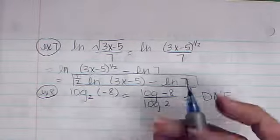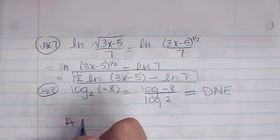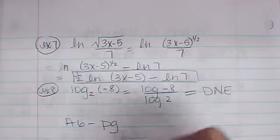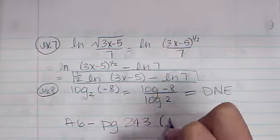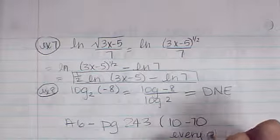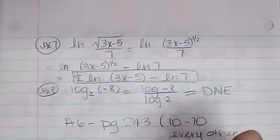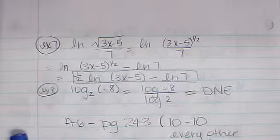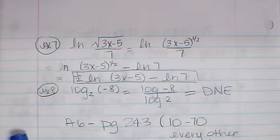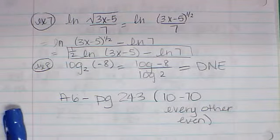That was the end of those notes for today. The assignment is A6, and that is page 243, and you're going to do 10 through 70, and you're going to do every other even problem. So that would be like 10, 14, 18, 22, 26, 30, on and on. It really doesn't amount to too many problems. I just wanted to give you quite a variety so that you can be sure that you get lots of practice. Let me know if you have questions.